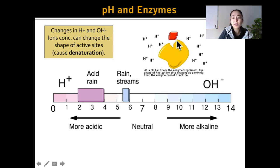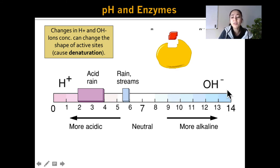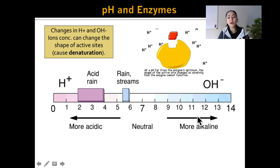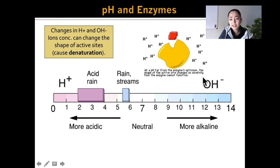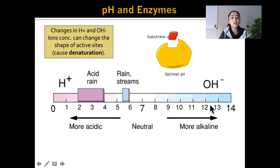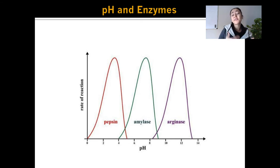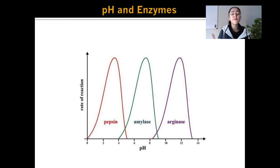Notice how the active site is changing in the enzyme so the substrate can no longer bind to it. The same things can happen in really basic environments — as the solution gets more alkaline, these negative hydroxide ions interact with the enzyme and cause it to alter its shape and become denatured. Just like every enzyme has a specific optimal temperature, enzymes also have a specific pH where they work the best, and this differs from enzyme to enzyme.